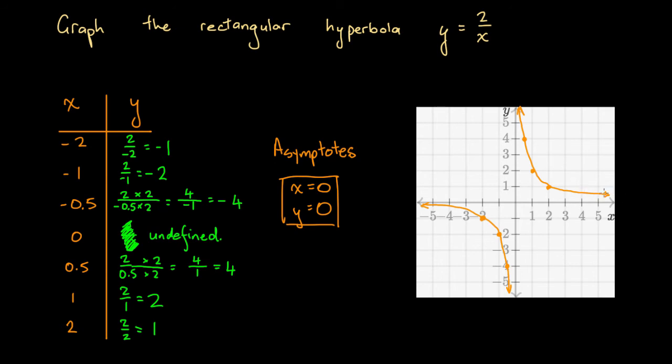We could say that as x goes to infinity, y gets closer and closer to 0 but never touches. As x approaches 0 but is still positive, y approaches infinity.